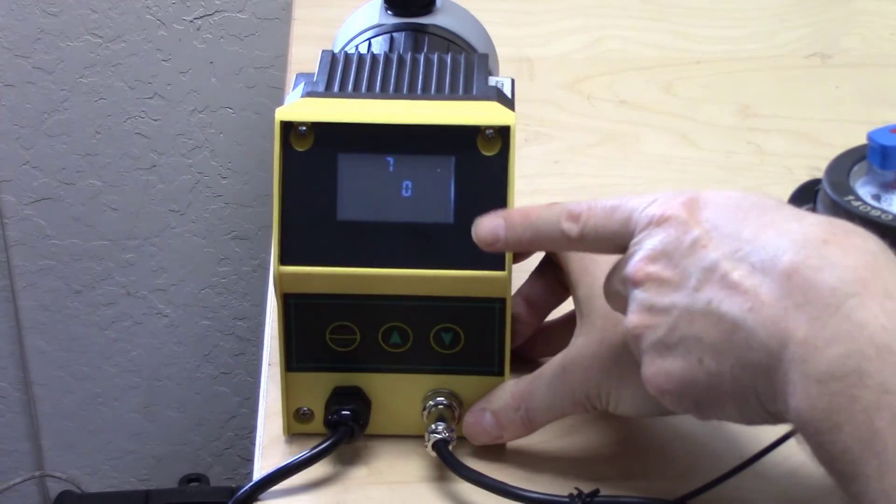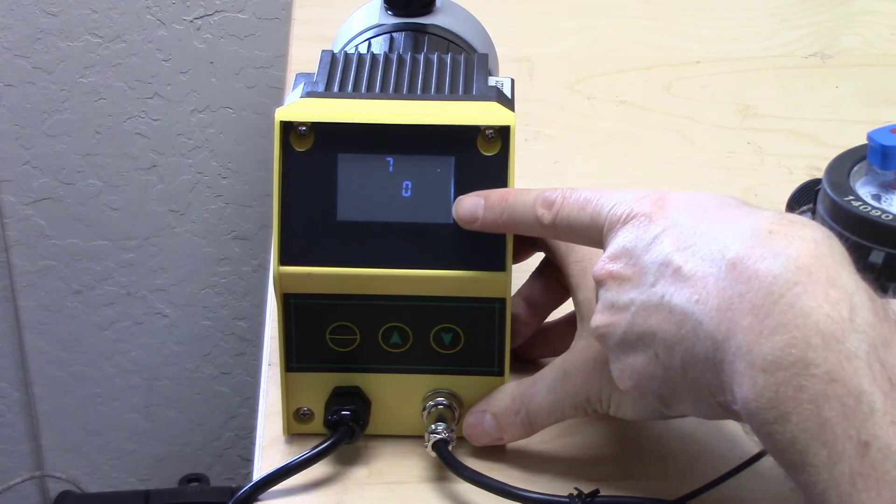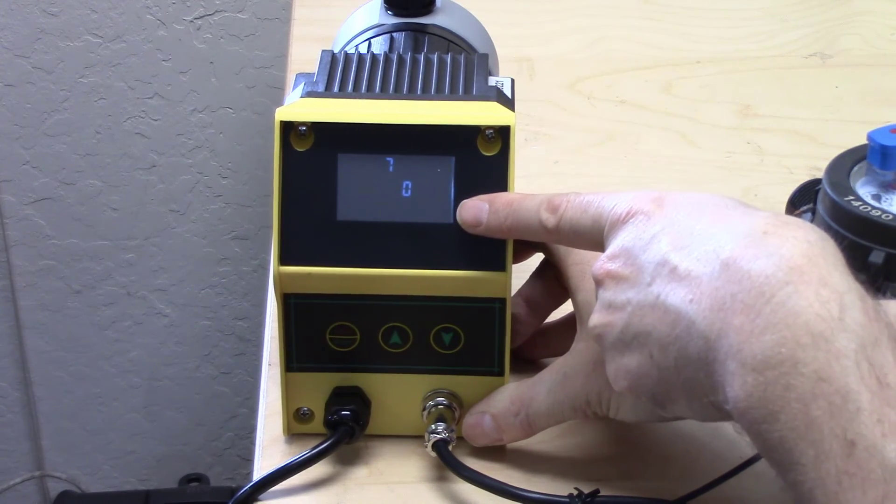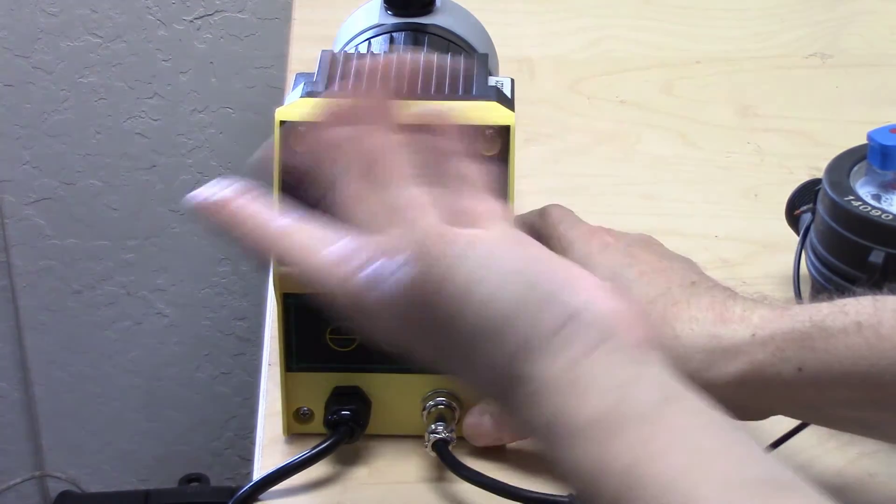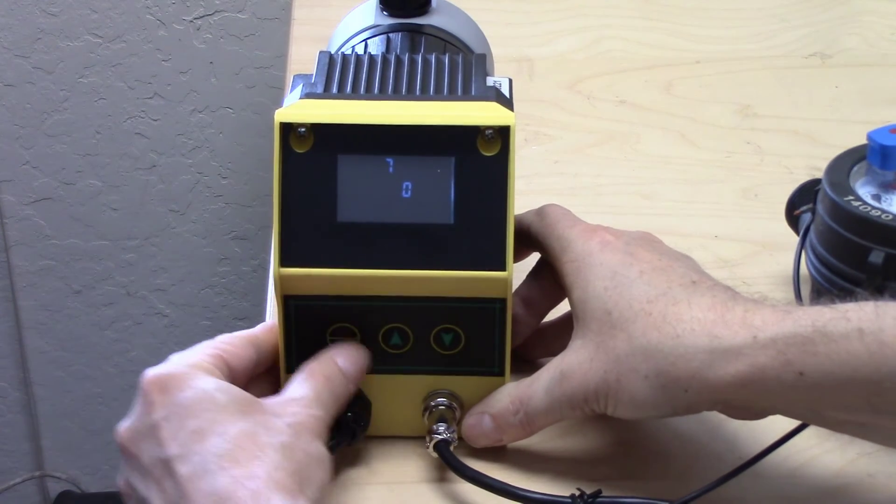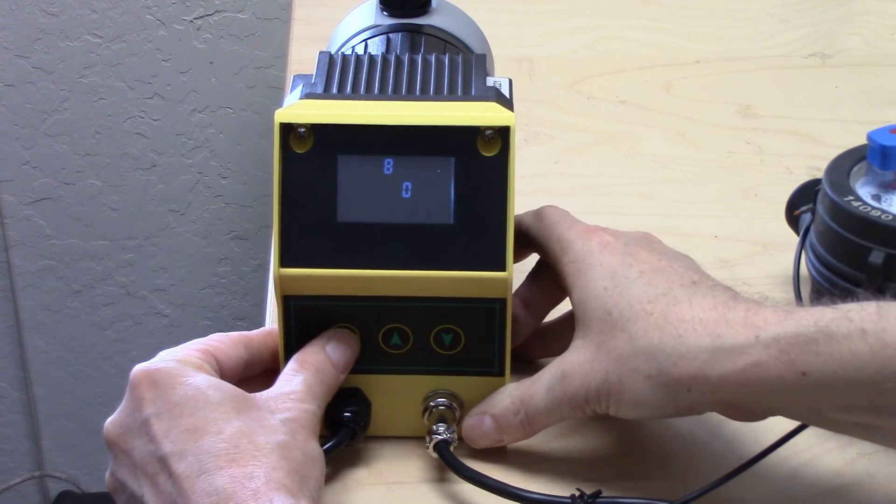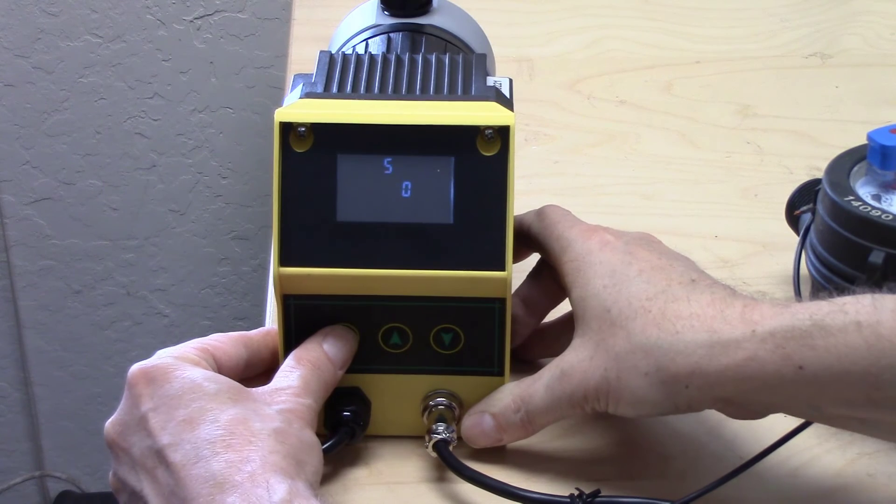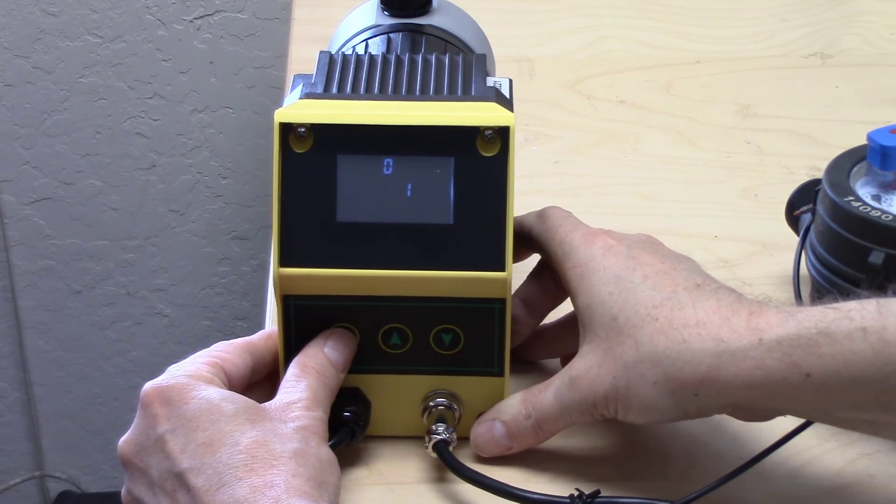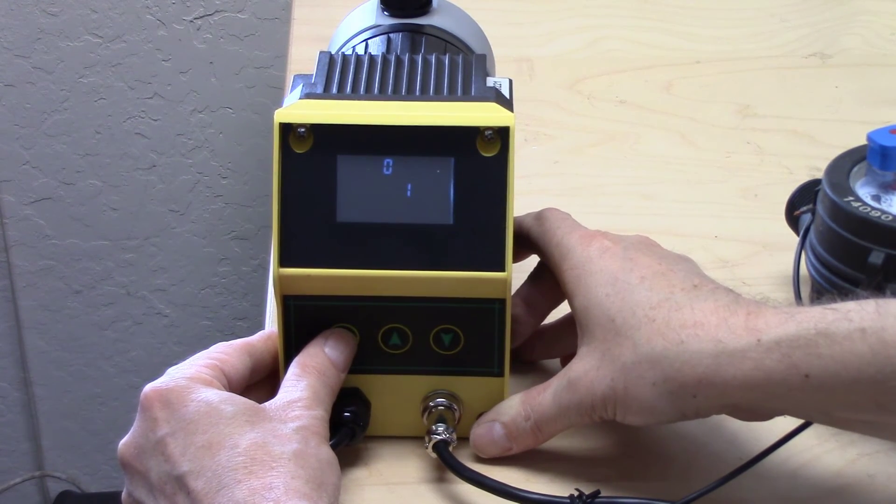When you're on standby is when you can enter into the programming by giving a slightly long press. It immediately goes in. Three, two, one, zero. One more second. There it goes and now it's back out again. So press and hold it, it goes right into it, and then poke the start stop button repeatedly to scroll through the menu options. There are nine menu options, zero through eight.